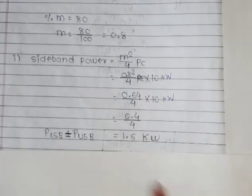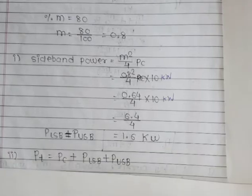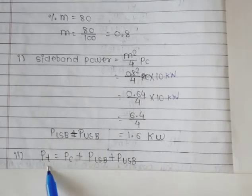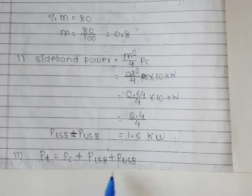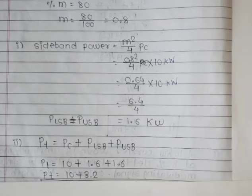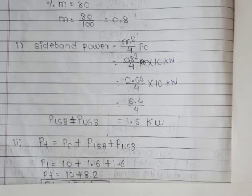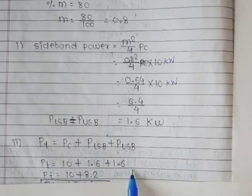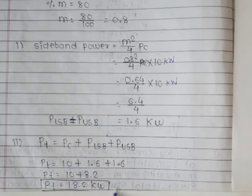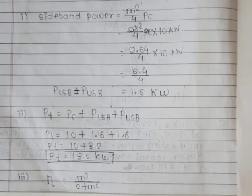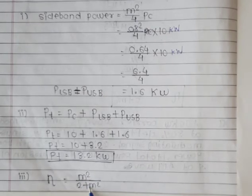Next, for total power, the formula is: total power = carrier power + PLSB + PUSB. Substituting values: carrier power = 10 kilowatt, PLSB = 1.6 kilowatt, PUSB = 1.6 kilowatt. Adding all three: total power = 10 + 1.6 + 1.6 = 13.2 kilowatt.